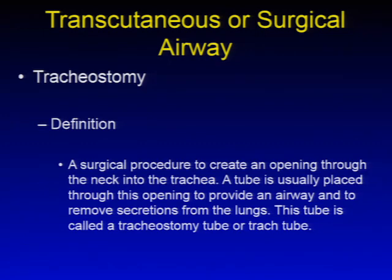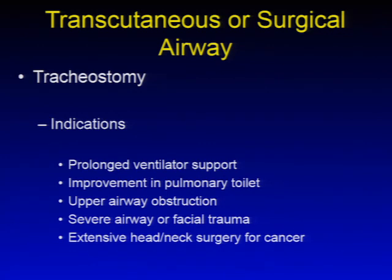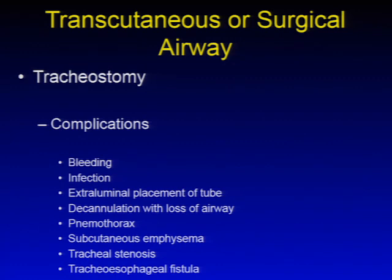Transcutaneous or surgical airways, starting with tracheostomy. By definition, it's a surgical procedure to create an opening through the neck into the trachea, with a tube placed through this opening to provide an airway and remove secretions. Indications include prolonged ventilatory support, improvement in pulmonary toilet, upper airway obstruction, severe airway or facial trauma, and extensive head and neck surgery for cancer. Contraindications include emergent hypoxemia, lack of familiarity, with distorted landmarks or coagulopathy as relative contraindications. Complications include bleeding, infection, extraluminal tube placement, decannulation with loss of airway, pneumothorax, subcutaneous emphysema, tracheal stenosis, or tracheoesophageal fistula.